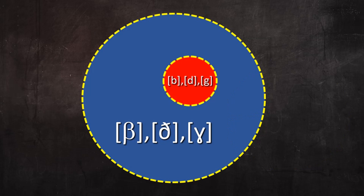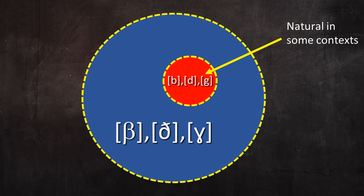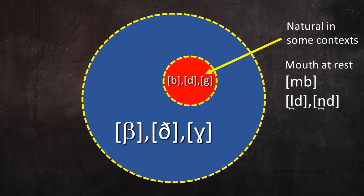The reason behind this phonological rule is easy to understand. The normal expression of these sounds is as approximants or fricatives, but there are certain phonetic contexts in which it's most natural to pronounce them as stops. At the beginning of an utterance, the mouth is at rest and the organs of the mouth are touching, so it's most natural to pronounce them with the organs touching: B, D, G. Additionally, M is pronounced with the lips touching, so immediately following M it's most natural to pronounce B with the lips touching too. Similarly, L and N are pronounced with the tip of the tongue making contact, so immediately following L and N it's most natural to pronounce D with the tongue making contact too. And the N sound preceding G is pronounced with the back of the tongue touching the soft palate, so immediately following N it's natural to pronounce G as a stop in the same spot.